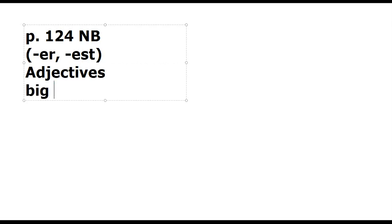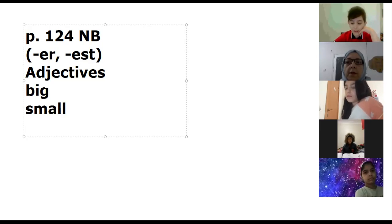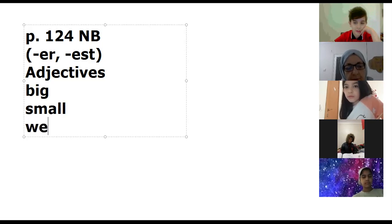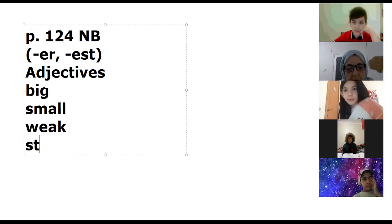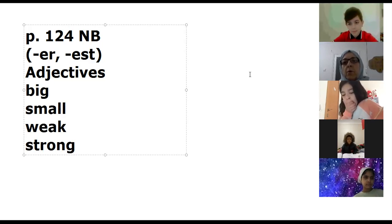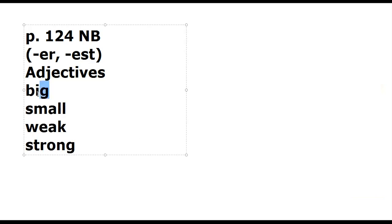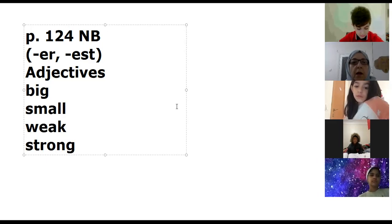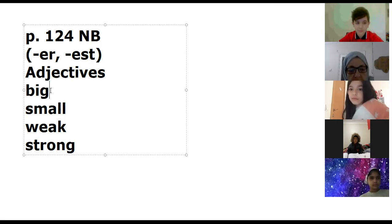We have big, small, weak, and strong as example adjectives. When an adjective has one vowel and one consonant, we have to double the last consonant and then add ER or EST.